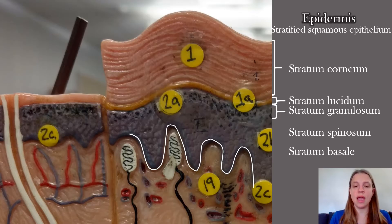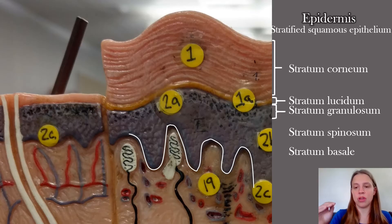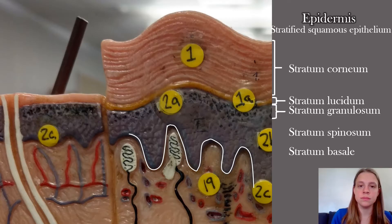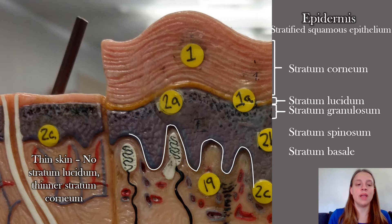At the very bottom is the stratum basale, which is only one layer of cells thick and is the only part of the skin that's undergoing mitosis. Everything between the stratum basale and the stratum granulosum is the stratum spinosum. In thin skin you actually only have four layers because there's no stratum lucidum.